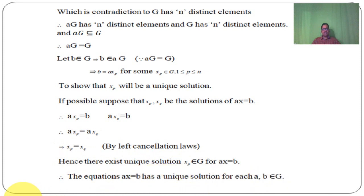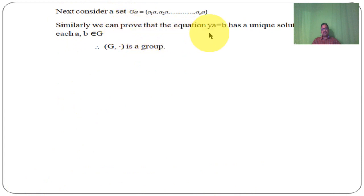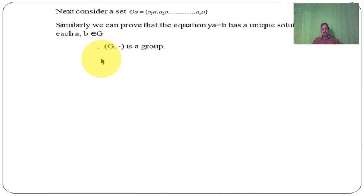Similarly, by considering the set GA, we can prove that the equation YA equal to B has a unique solution for each A, B belongs to G. Therefore, by the previous theorem, G dot is a group.